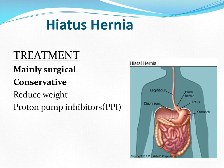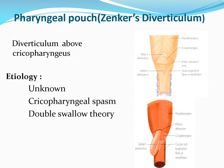Treatment of hiatus hernia is mainly conservative — reduce weight and give proton pump inhibitors to decrease acid at the lower end. The pharyngeal pouch, or Zenker's diverticulum, is a diverticulum that forms above the cricopharyngeus.